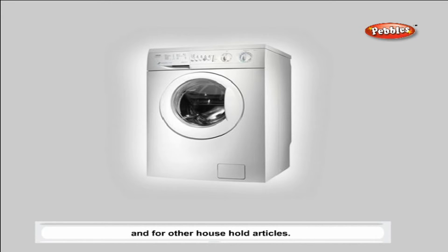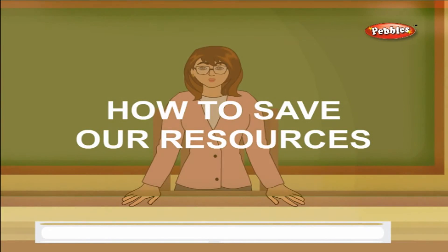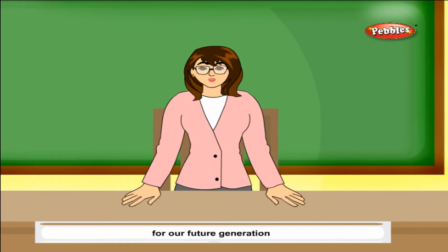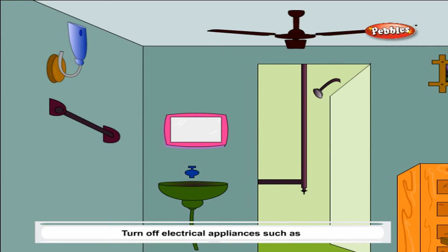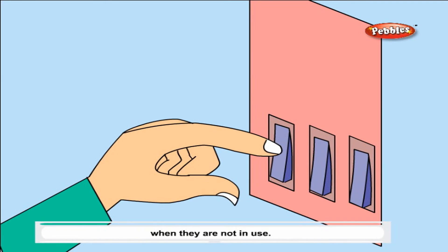Most of these resources come from nature. In order to save and protect these resources for future generations, we should keep in mind certain ways. Turn off electrical appliances such as lights and fans when they are not in use.